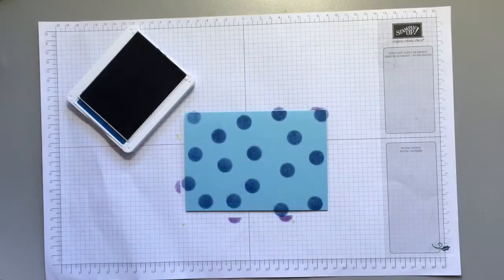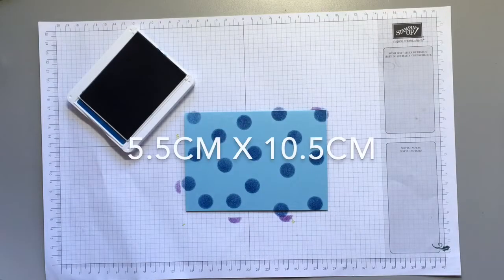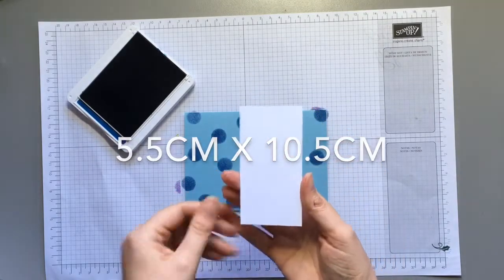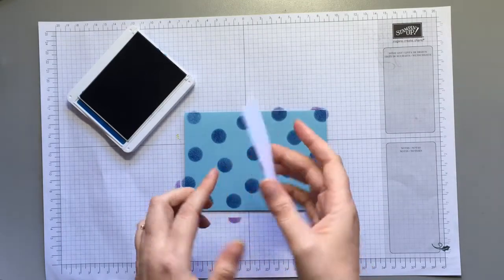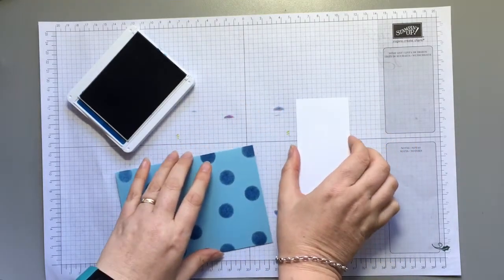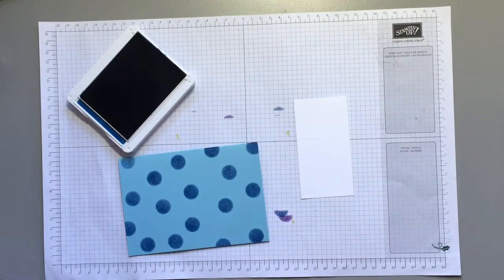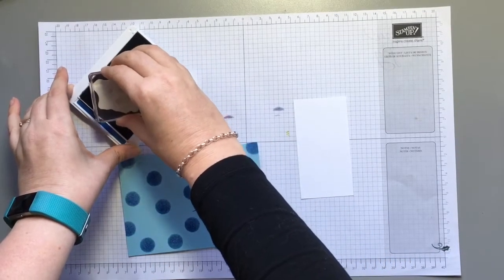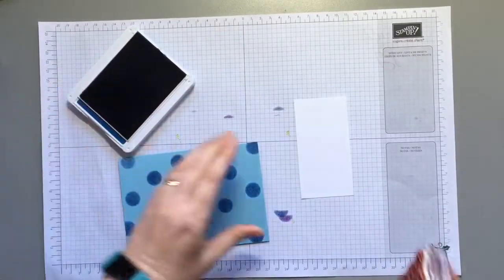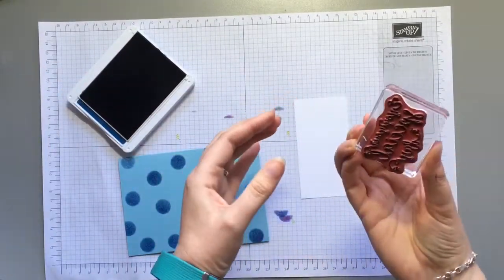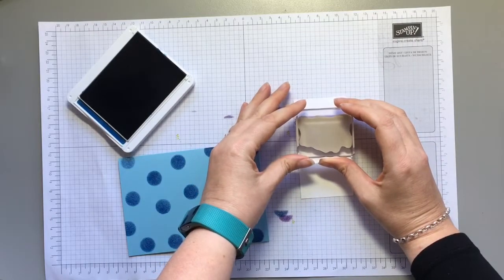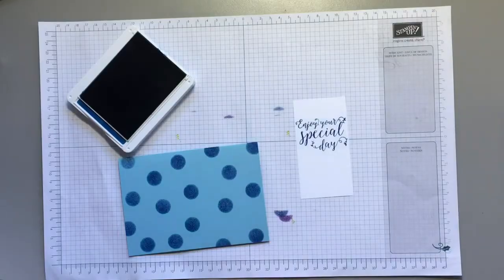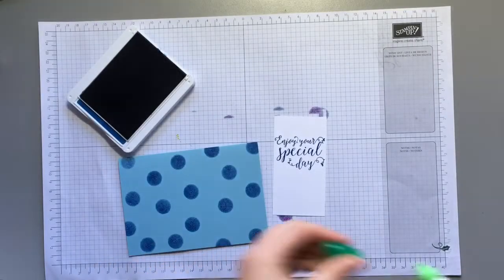Now I'm grabbing a piece of Whisper White cardstock which is cut at five and a half centimeters by ten and a half centimeters. It looks like I've just got some ink there from my hands so I'm just going to flip that over and I'm grabbing the Enjoy Your Special Day sentiment stamp from the Stitched All Around set making sure that I've got it the right way up. I'm just going to pop that down. I'll grab some Tombow Liquid Glue.